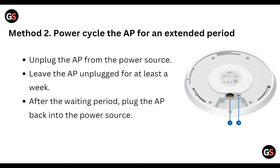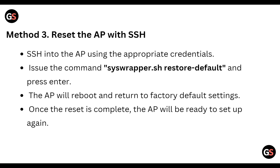The second method is to power cycle the AP for an extended period. Unplug the AP from the power source and leave it unplugged for at least a week. After the waiting period, plug the AP back into the power source.